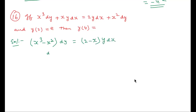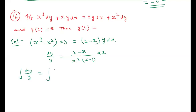Separating variables: dy/y = (2 − x) / [x²(x − 1)] dx. Integrating both sides, we need to simplify the right-hand side by splitting into partial fractions: (2 − x) / [x²(x − 1)] = A/x + B/x² + C/(x − 1).